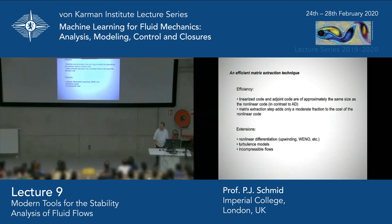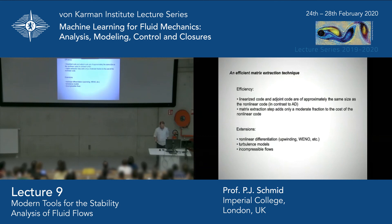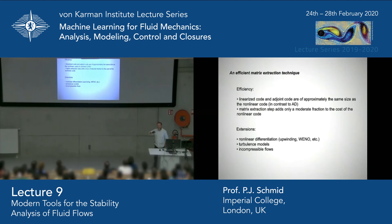The efficiency is excellent: the linearized code and the adjoint code are approximately the same size — none of the code explosion you get with automatic differentiation. The matrix extraction step adds only a moderate fraction of cost. Linearization on the fly is so cheap you don't even need to store the matrix — generate it whenever needed. The adjoint is accurate to machine precision, and you don't have to worry about boundary conditions, which are usually the killer when deriving the adjoint by hand, because everything is lumped together in the block diagram.